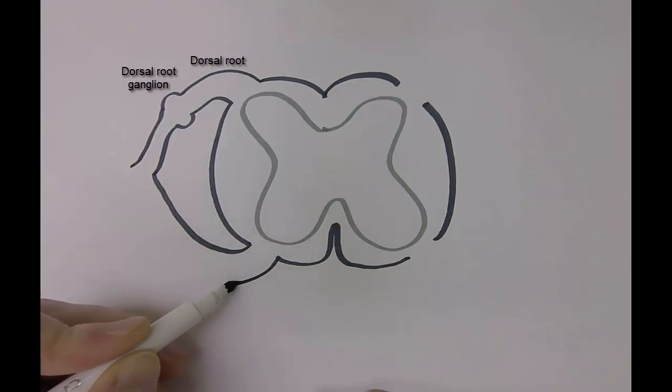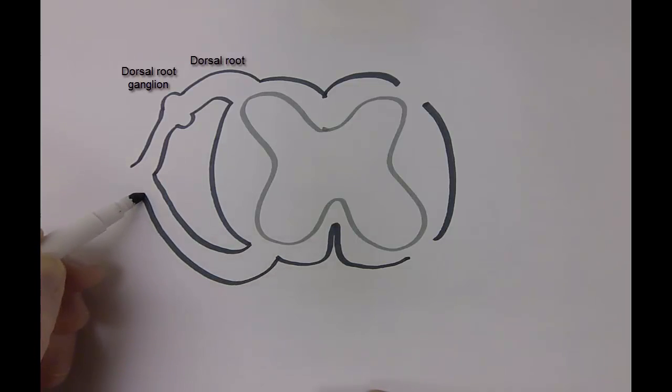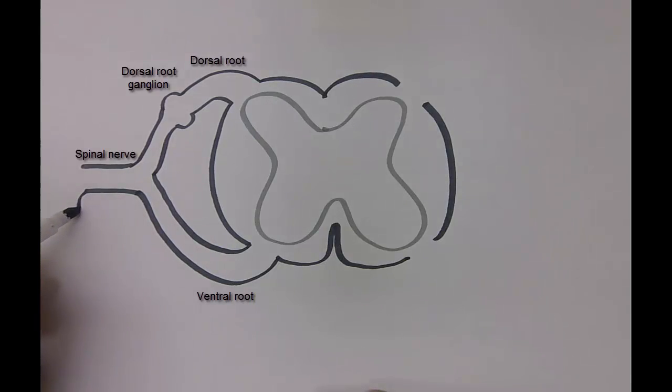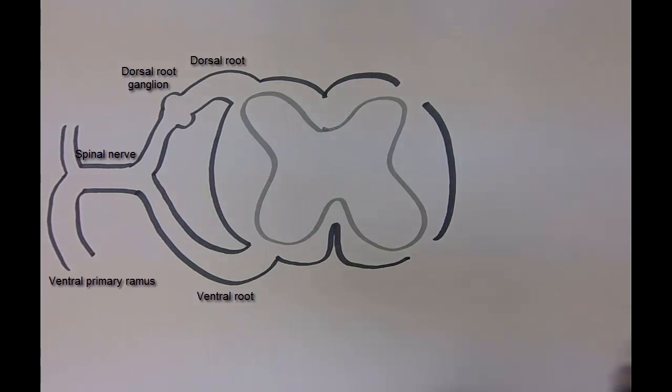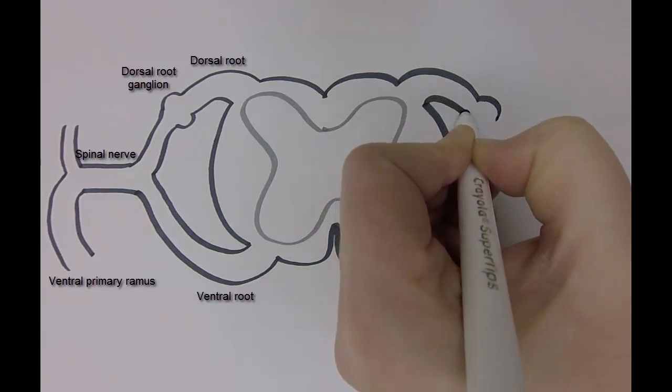I'll also draw in a ventral root. Note that these two roots combine to form a spinal nerve, and you have 31 pairs of spinal nerves in the body. Each spinal nerve divides into a larger ventral primary ramus and a smaller dorsal primary ramus.